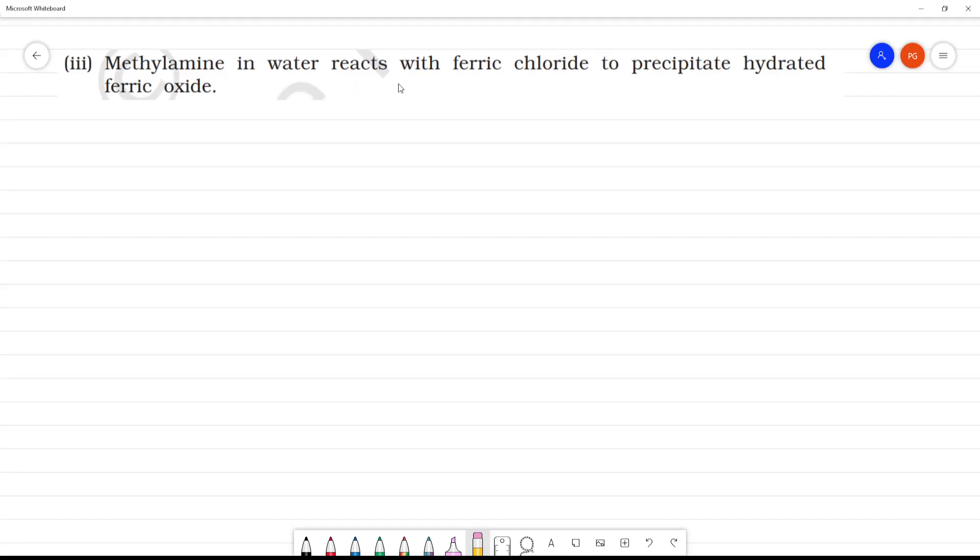Methylamine in water reacts with ferric chloride to precipitate hydrated ferric oxide. If we look at this practical question, we will ask this. So, what do we do?